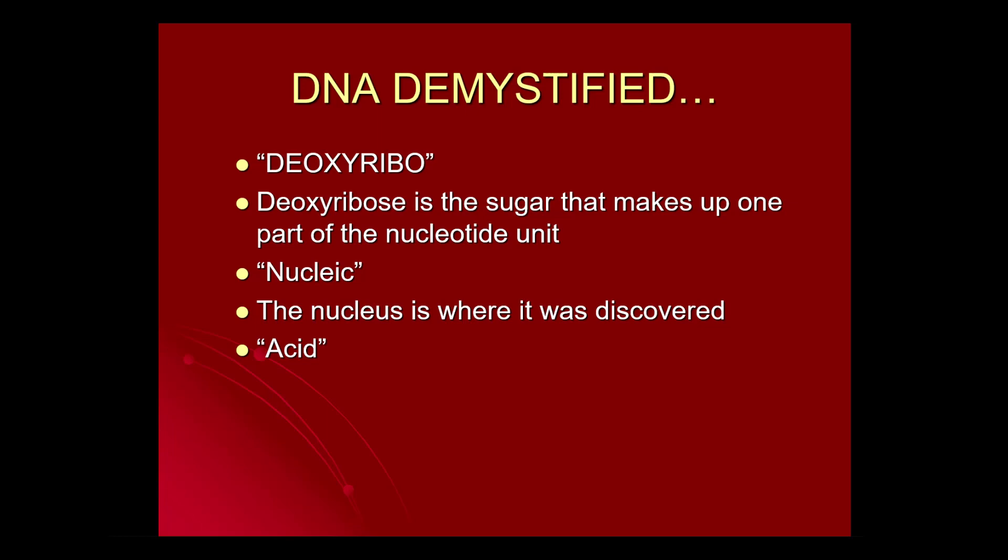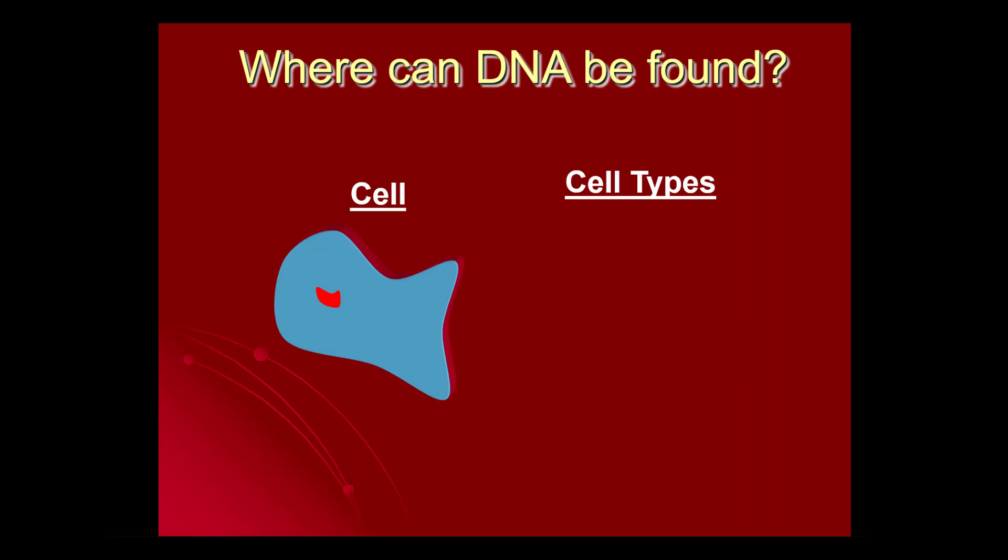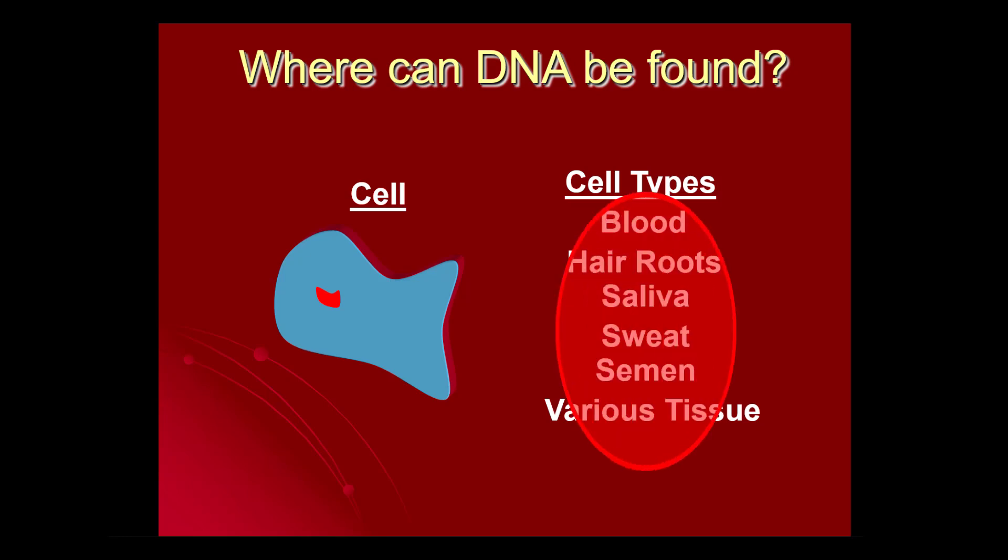That's the first place that it was found. It's not the only place DNA is, but it's the first place where it was found. And then acid refers to the fact that there is an organic acid functional group on DNA. Now where can we find DNA? Well, DNA is largely found in your cells, and it doesn't matter what type of cell it is - blood, hair, saliva, sweat, semen from a crime scene, various body tissues.